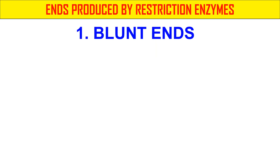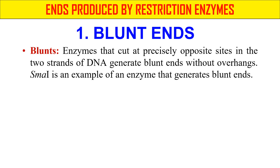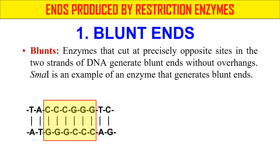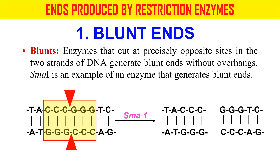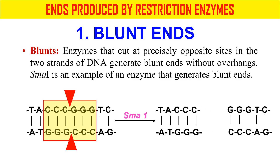Now let's discuss about the ends which are generally produced by restriction enzymes. There are two kinds of ends produced: first, blunt ends, and second, sticky ends. Blunt ends are ends which do not have unpaired bases or overhang bases. Here is an example of the SmaI enzyme — this is the sequence recognized by SmaI, and upon cleavage it produces two molecules which are blunt, with no unpaired base pairs or overhangs. These are examples of blunt ends.